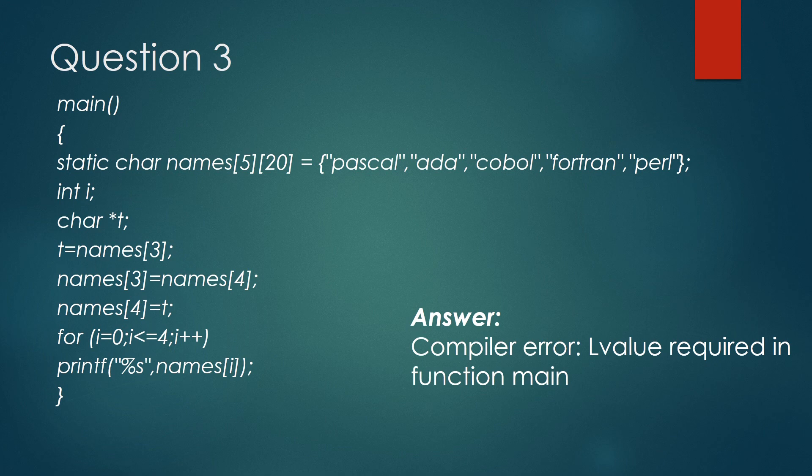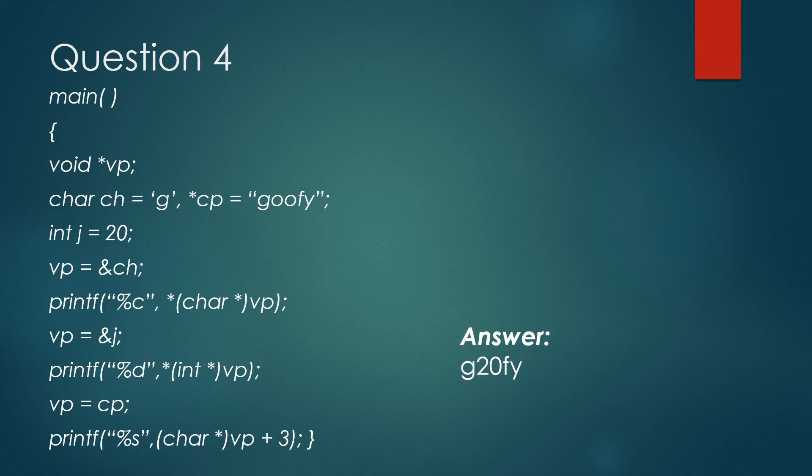Let's come to the fourth question. Inside this question there is use of void pointer. Since a void pointer is used, it can be typecasted to any other type pointer. Let's say vp = &ch stores the address of char ch, and the next statement prints the value stored in vp after typecasting it to the proper data type pointer.